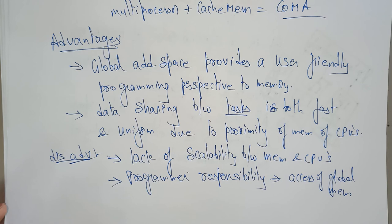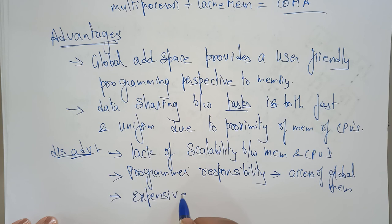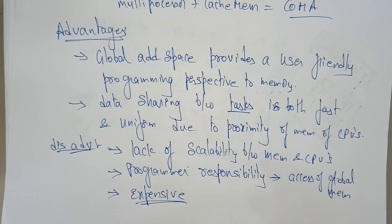Another disadvantage of the COMA model is that it is expensive. Designing and producing the shared memory with an increasing number of processors is one of the expensive aspects of using the COMA model.